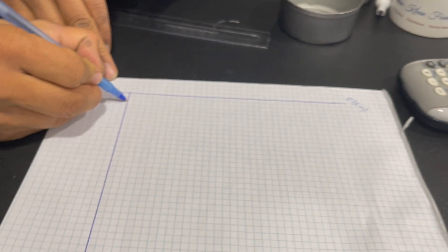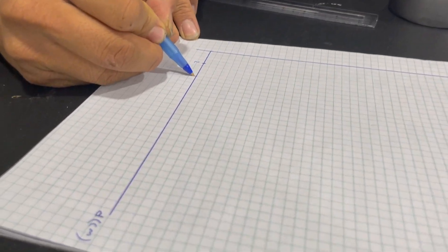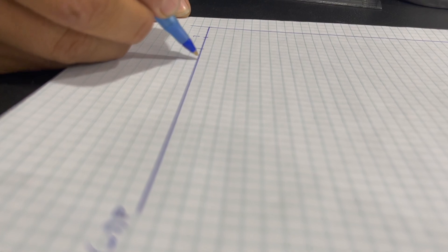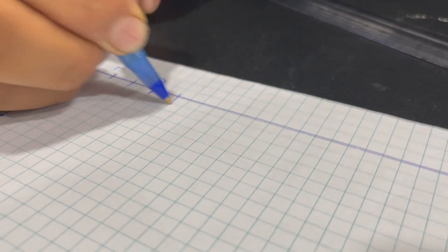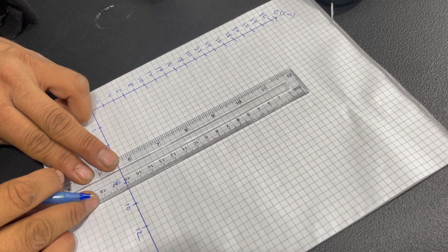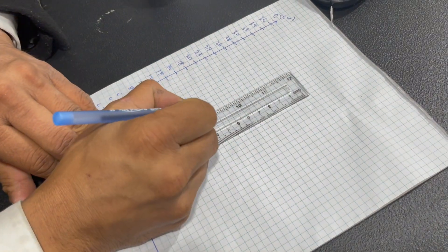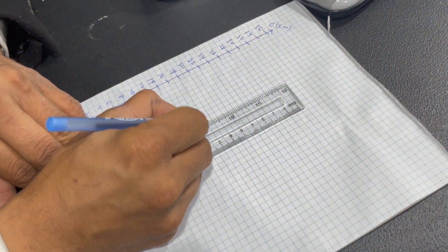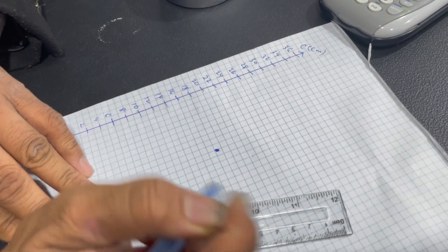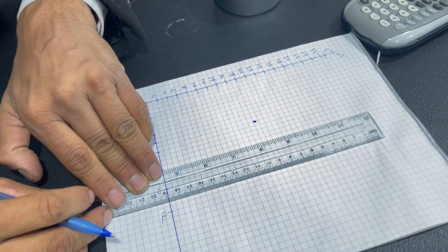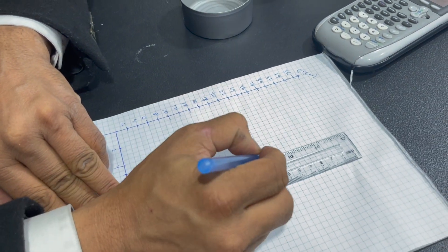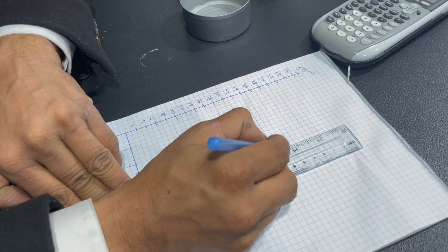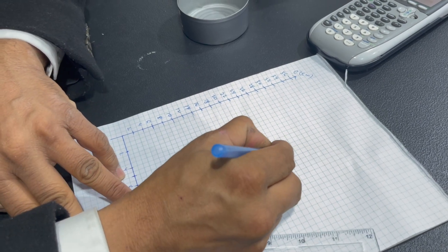So let's do the best-fit line. This is 1, 2, 3, 4. 5.5 comma 18.1. So this is 18, so 18.1 has to be right here. Okay 25.8 which is about 26. So this is 25, so 25.8 which is close to 26.